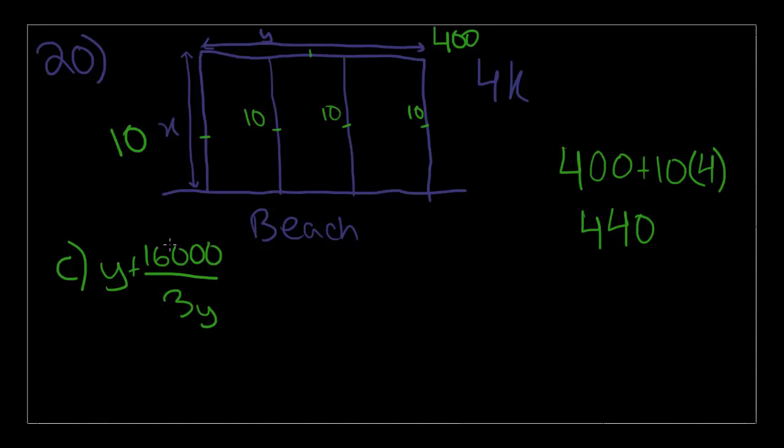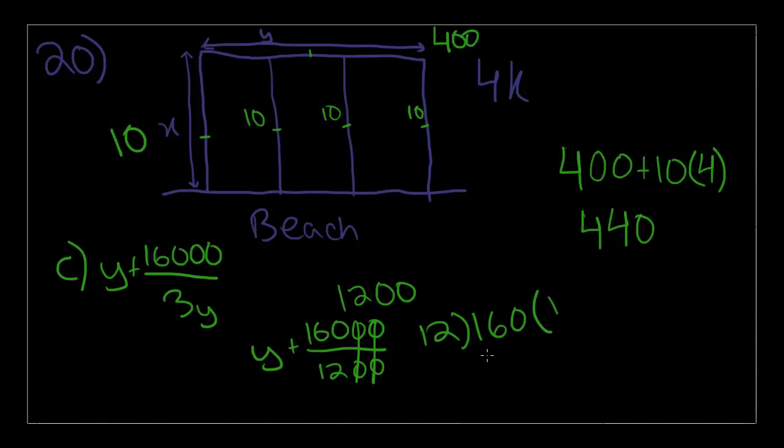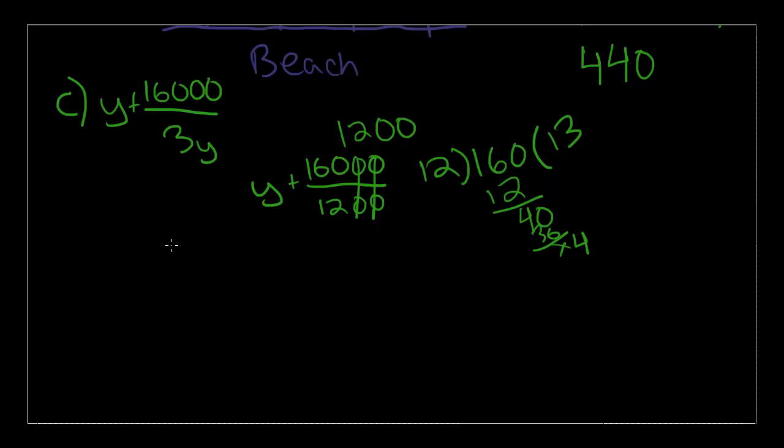Let's start with choice C. Choice C says Y plus 16,000 over 3Y. Y equals 400, so 3 times Y equals 1,200. Y plus 16,000 over 1,200. You can cross off two sets of zeros. 160 divided by 12 is 13 point something. 13 plus 400 is not 440. It's actually less. So let's go to choice D and check that one out.